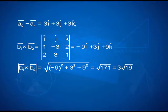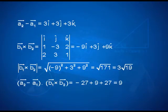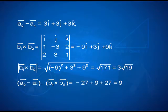Once you have B1 cross B2, find its magnitude, which simplifies to root 171, the same as 3 times root 19. Now find A2 minus A1 dotted with B1 cross B2. The dot product turns out to be 9, computed as the corresponding components multiplied: (−9×3) + (3×3) + (9×3) = 9. Plugging all values into the formula, the shortest distance comes out to be 3 divided by root 19 units.